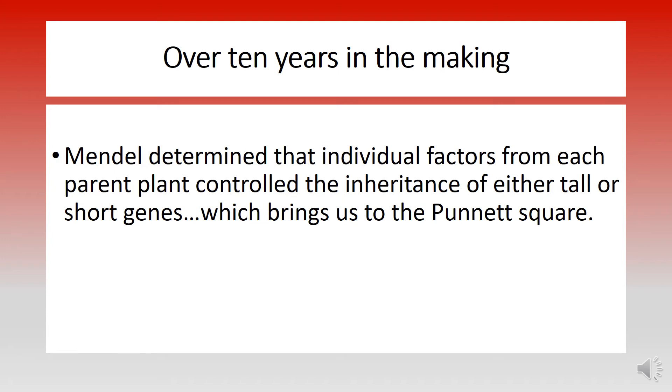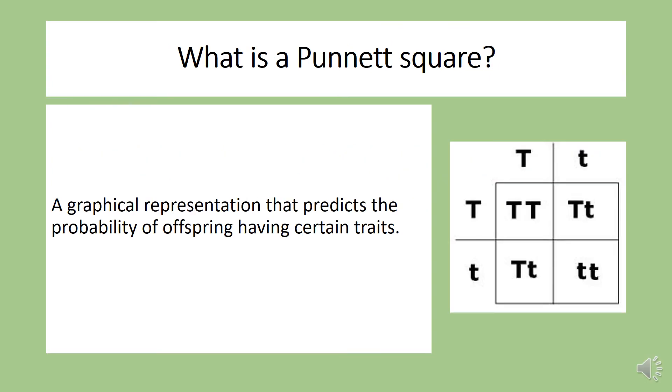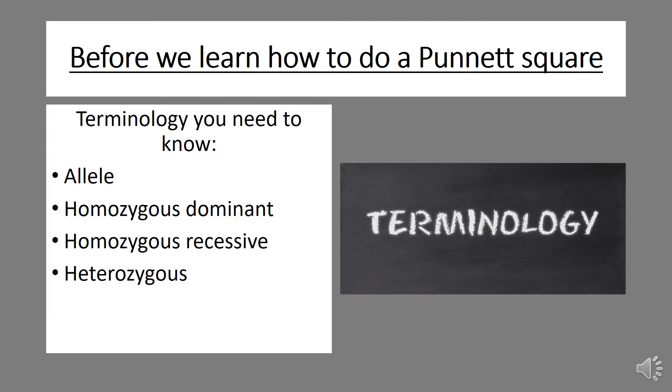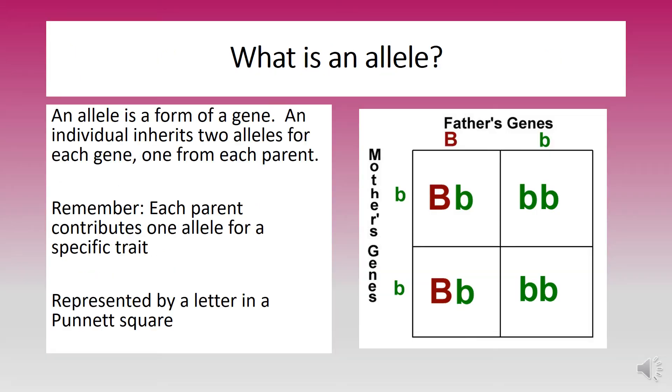Which brings us to the Punnett square. A Punnett square is a graphical representation that predicts the probability of offspring having certain traits. Now before we learn how to do a Punnett square, there's some terminology we should know. These words include allele, homozygous dominant, homozygous recessive, and heterozygous. An allele is a form of a gene. An individual inherits two alleles for each gene, one from each parent. Remember, in sexual reproduction each parent contributes one allele for a specific trait. Alleles are represented by a letter in a Punnett square.